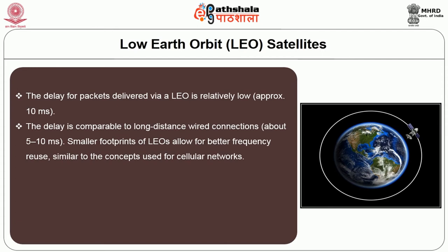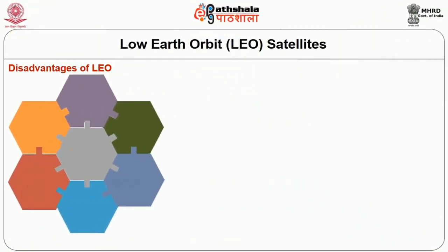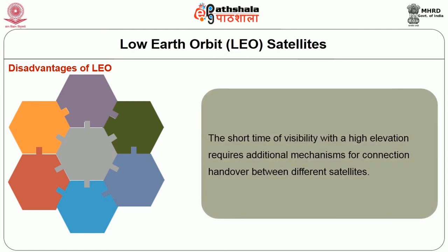Smaller footprints of LEO satellites allow for better frequency reuse, similar to concepts used for cellular networks. LEO satellites can provide much higher elevation in polar regions, giving better global coverage. These satellites are mainly used in remote sensing and providing mobile communication services. The biggest disadvantage of LEO is the need for many satellites if global coverage is to be reached — several concepts involve 50 to 200 or even more satellites in orbits. The short time of visibility at high elevation requires additional mechanisms for connection handover between different satellites.